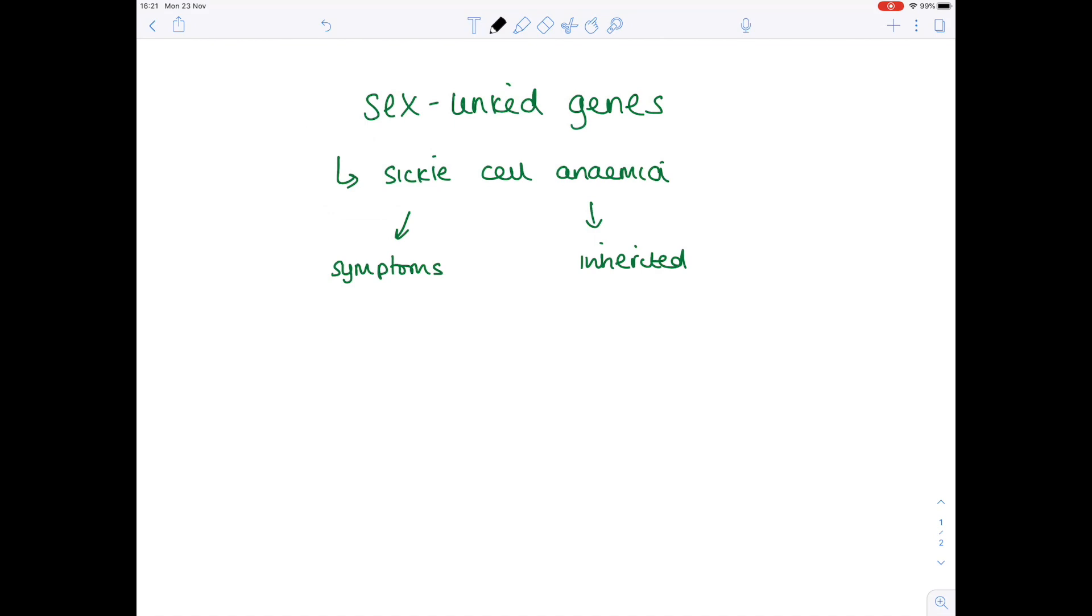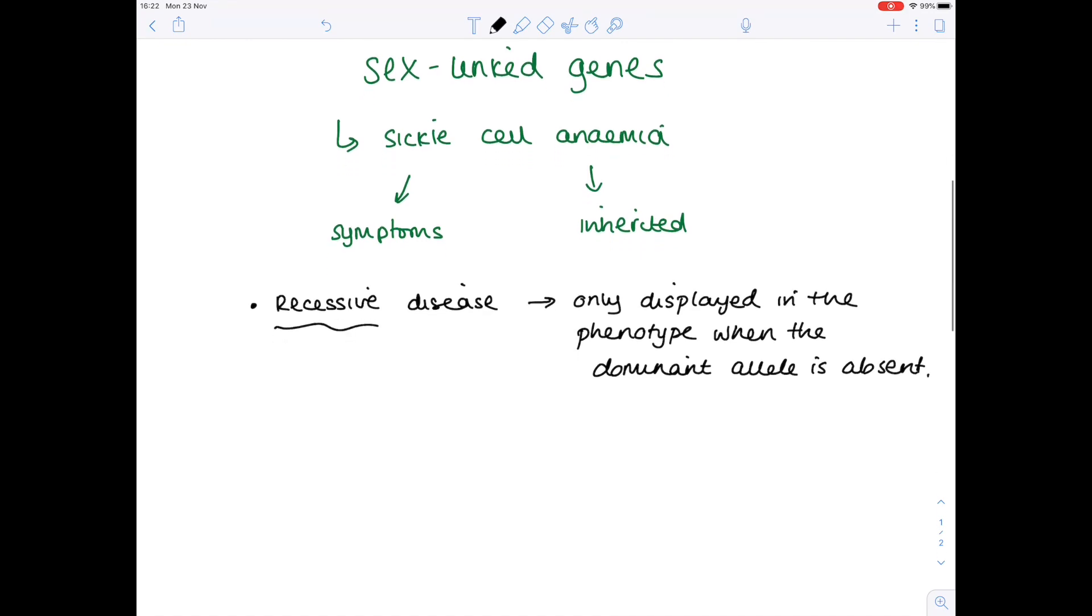So the first thing to point out is that it is a recessive disease, which means it's only displayed in the phenotype when the dominant allele is absent. And that's going to be incredibly important later on, and I'll point out why that is.